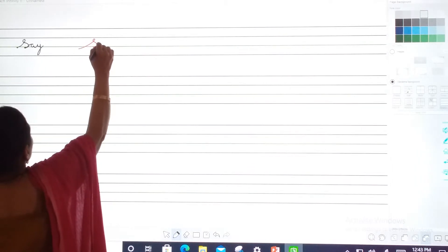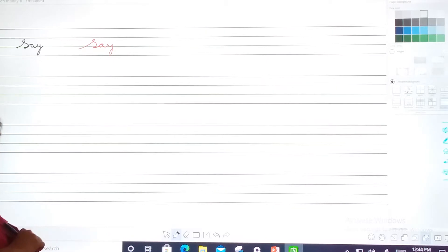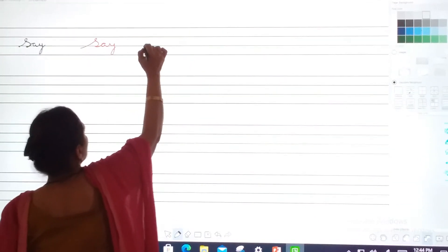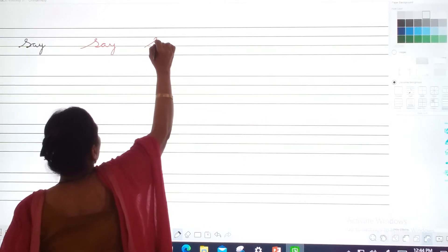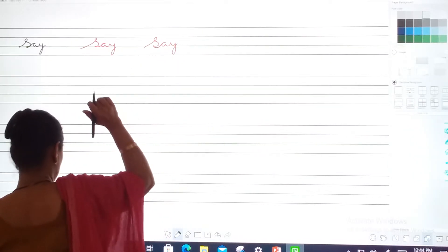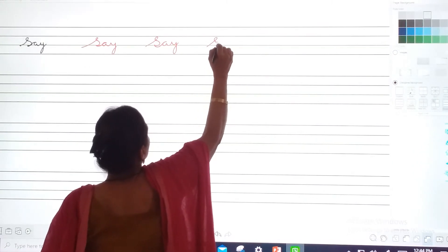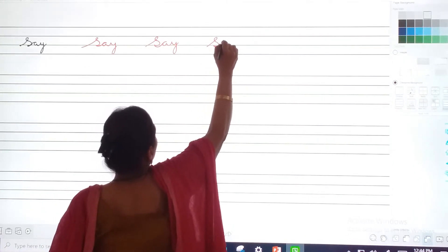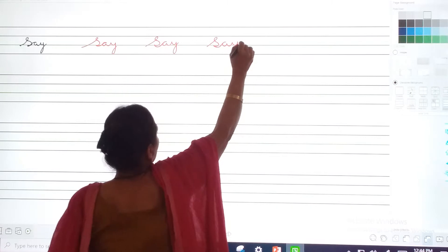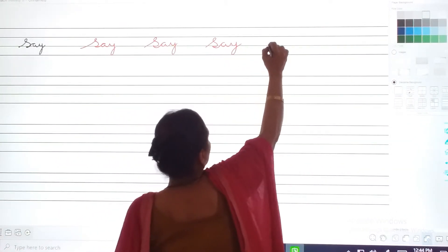Aapko kaise likhna hai? Say. Aise likhna hai? Okay, right? No? May I write once again? Okay, see. How we will write? S, A, Y. Am I right? No? Okay, let's try again.